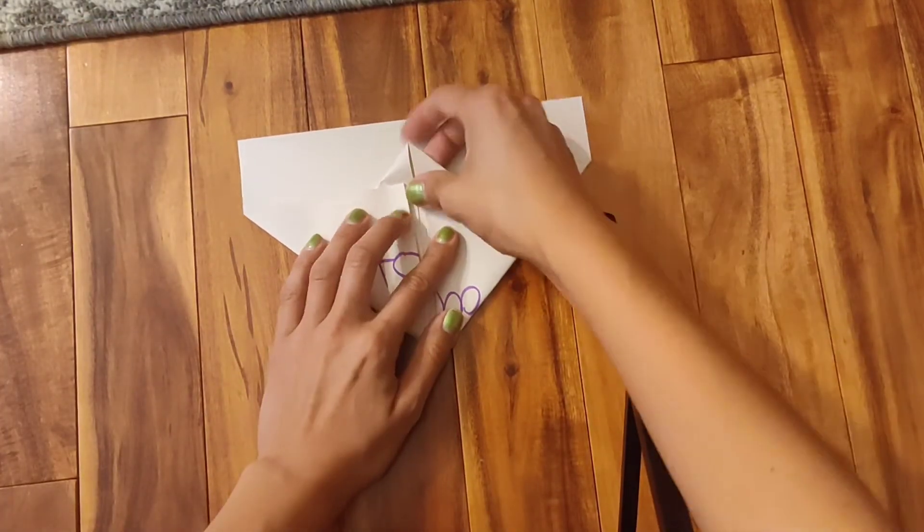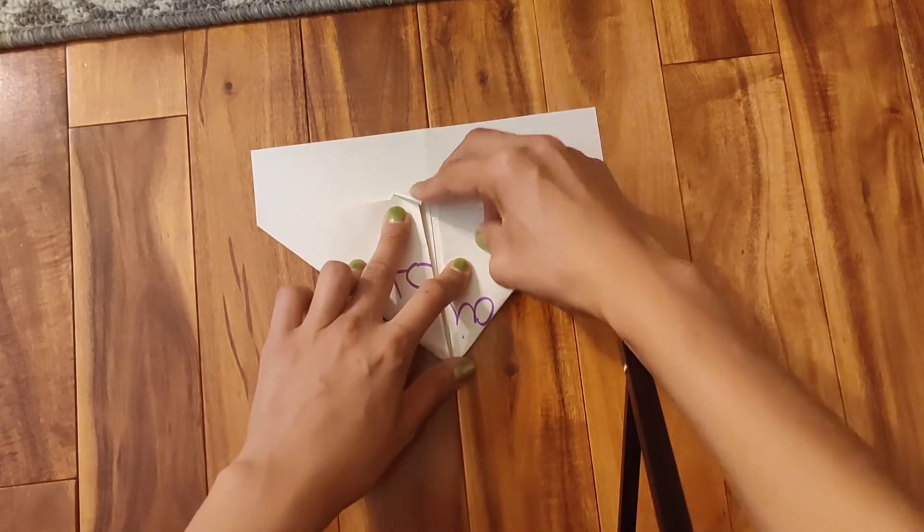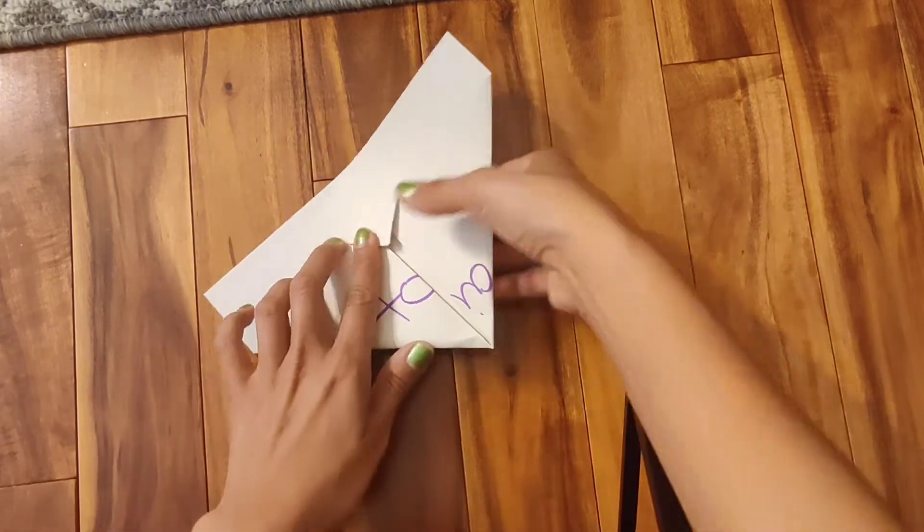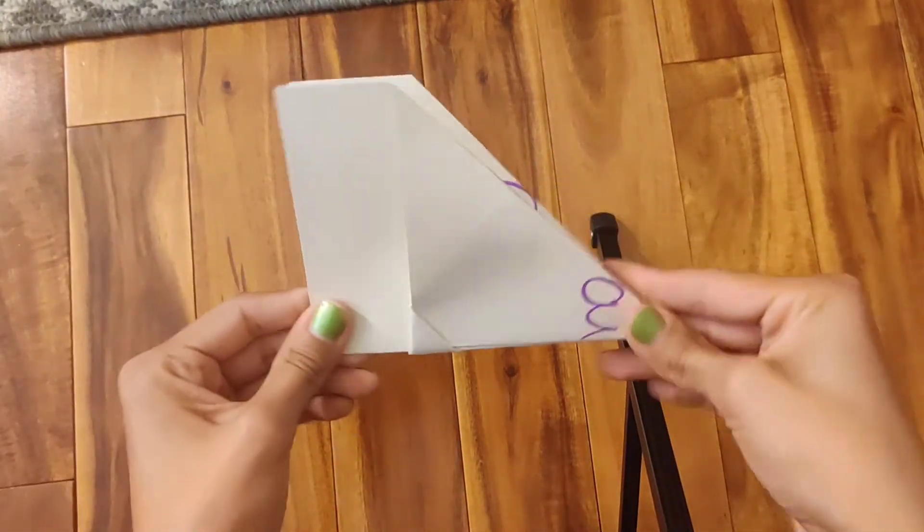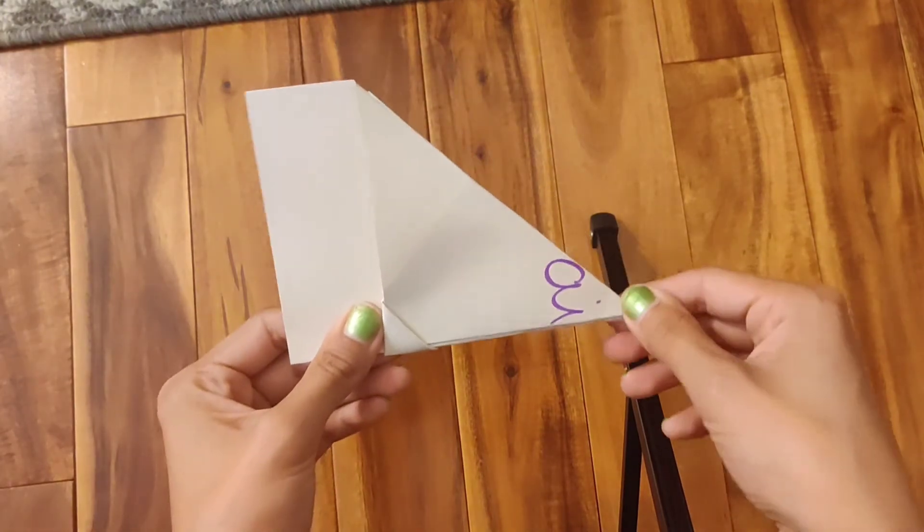And then you have this little flap. Once you have this little flap, you're going to close it like that. And you're going to carefully fold it so that it stays inside. So you end up with a shape like this.